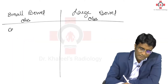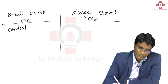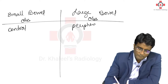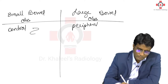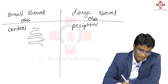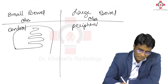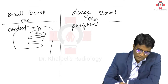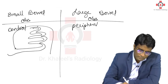Central bowel loops that are dilated will be small bowel loops, while large bowel will obviously have peripheral loops. So, small bowel loops are central and large bowel loops are peripheral.